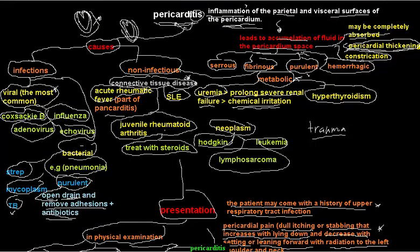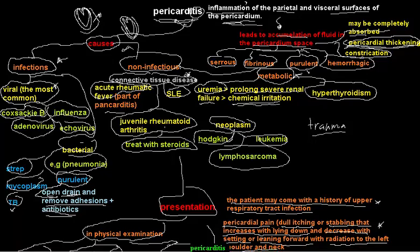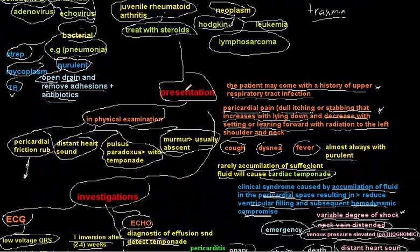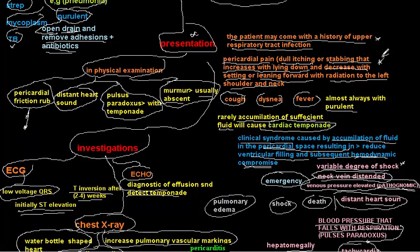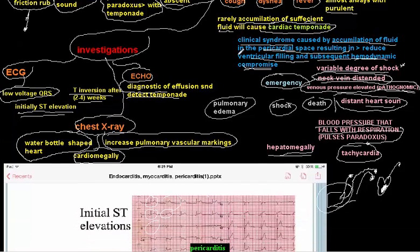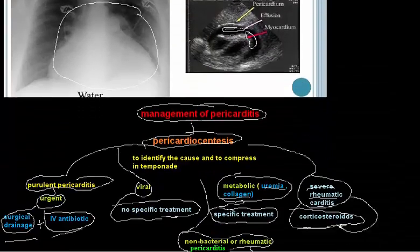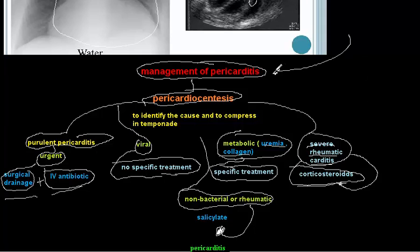In summary, this lecture covered: the definition of pericarditis; infectious and non-infectious causes; cardiac tamponade; the presentation including history, nature of pain, and physical examination; investigations including ECG, chest X-ray, and echocardiogram; and management including pericardiocentesis to identify the cause and decompress in tamponade cases. Pericardiocentesis is the definitive treatment for tamponade. Thank you for watching.